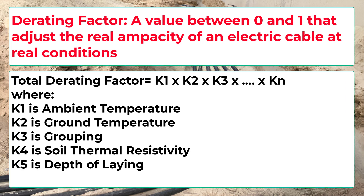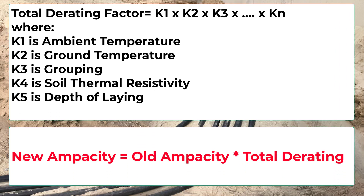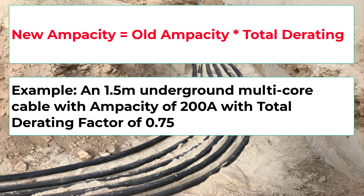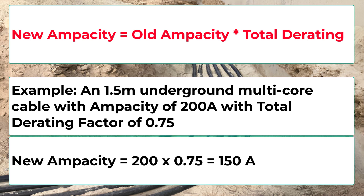You then calculate the new ampacity of your cable by multiplying the default ampacity value by the rating factor. For example, if you have a multi-core cable with a default ampacity of 200 amperes, installed underground at 1.5 meters depth, with an ambient temperature of 45°C, and alongside other cables — using tables, all these factors together give a derating factor of 0.75. So the new safe ampacity equals 200 A × 0.75 = 150 amperes.